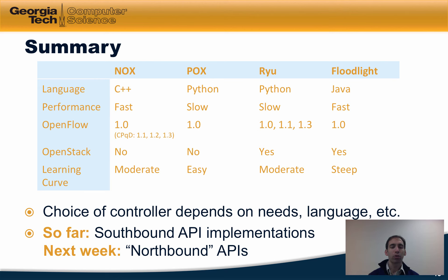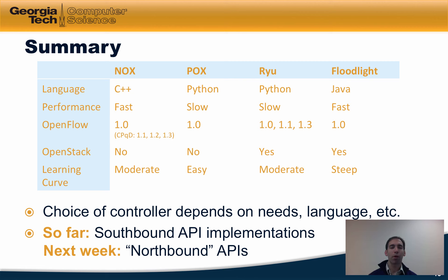In summary, the choice of controller depends on your needs for integration with various features, your comfort with different programming languages, your need for performance, and your need to support the latest versions of the OpenFlow protocol standard. This lesson mainly focused on controllers that are re-implementations of the southbound API in different programming languages. Next week, we'll talk about SDN controllers that provide support for northbound APIs or policy layers that sit on top of lower-level SDN controllers.